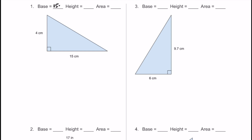Now, what about the height of this triangle? The height has to be perpendicular to the base — that's 90 degrees to it. Here is the height, and you can see it is 90 degrees to the base, so that's going to be 4 centimeters. So we have the base and the height.